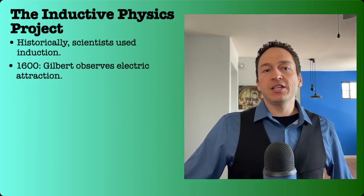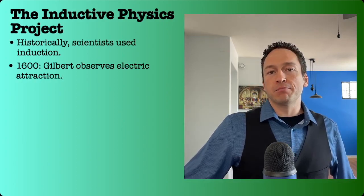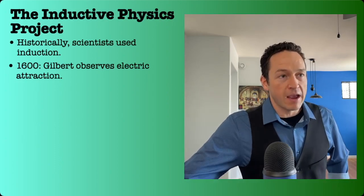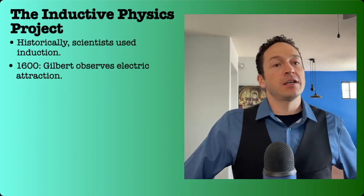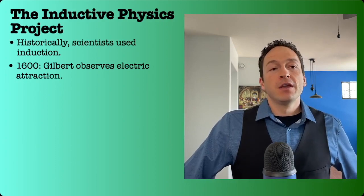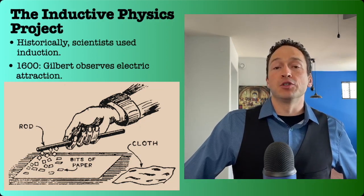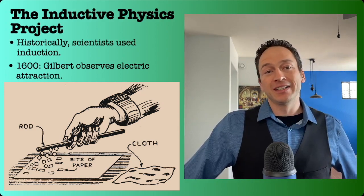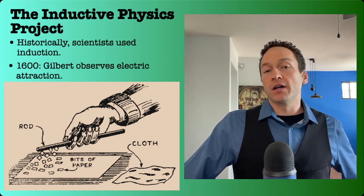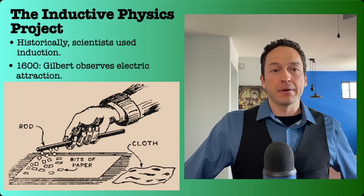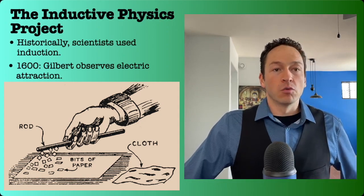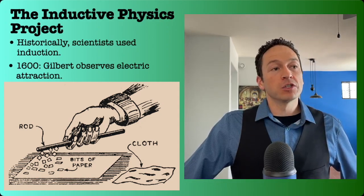Now, it turns out that the history of science already proceeded in this way, for much of the history of physics anyway, for the successful part. For example, around 1600, William Gilbert directly observed that some objects, which he called electric, could attract water, metal, or bits of paper. These were direct observations, which can be known with certainty.